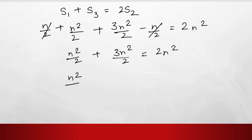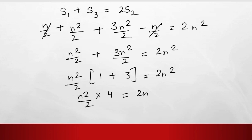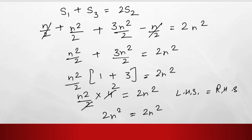Taking n squared upon 2 common, we get 1 plus 3 equals 4, so n squared upon 2 times 4 gives 2n squared, which equals 2n squared. Therefore, the left-hand side equals the right-hand side. Hence, proved. This is the end of the question.